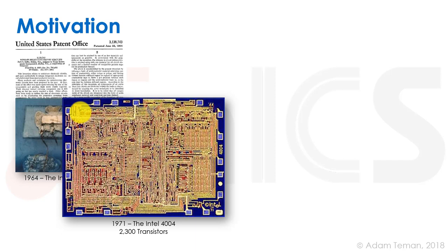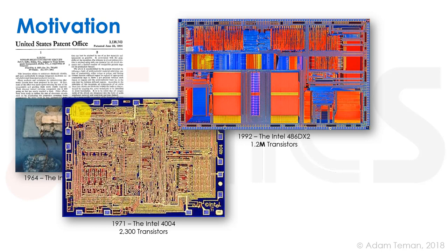The next motivating step came in 1971, when Intel released the Intel 4004 — the first monolithic microprocessor — putting 2,300 transistors on one chip on a single substrate. In just a few years from the invention of the IC, they had already gone three orders of magnitude higher in functionality. Then in 1992, the Intel 486 DX2 became one of the first processors to have more than a million transistors on a single die.